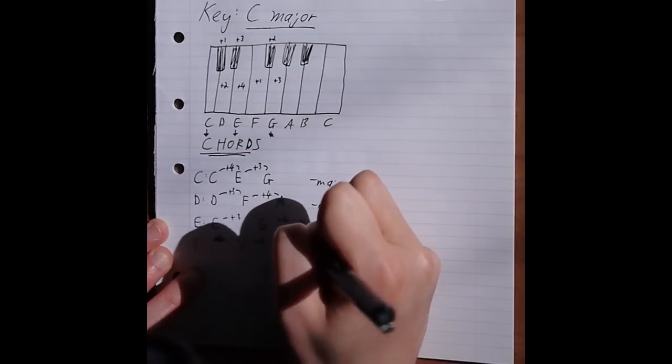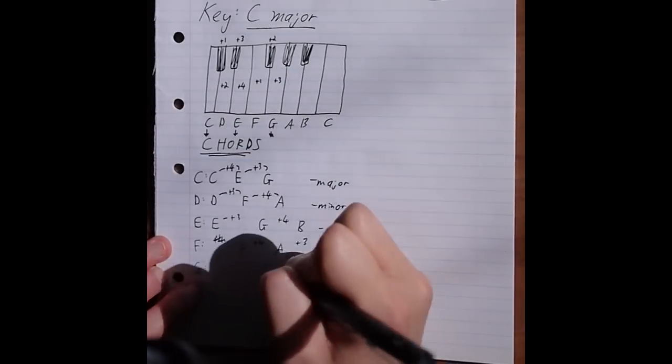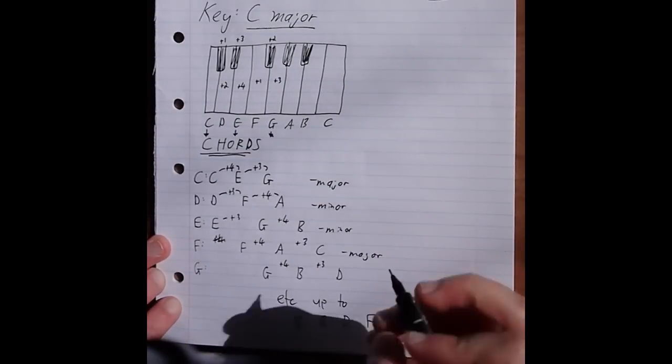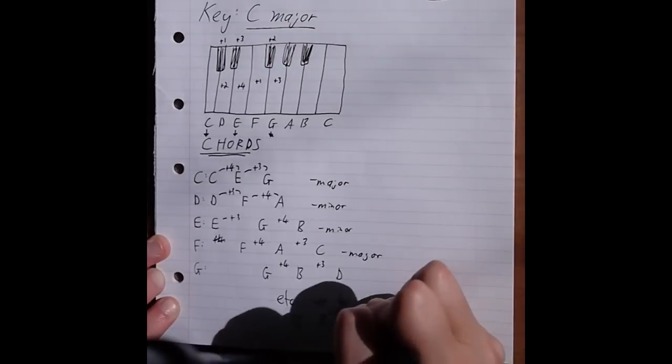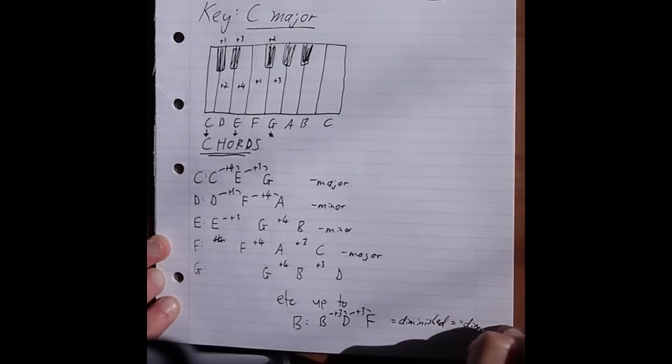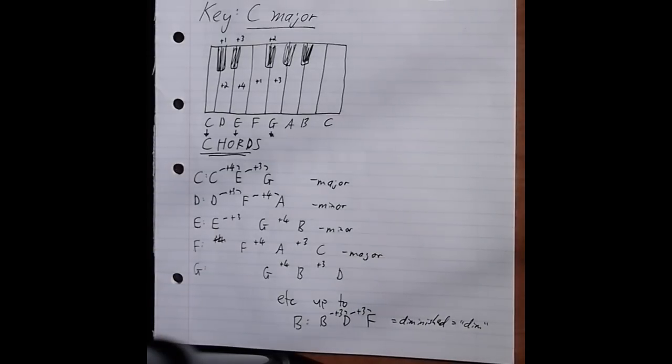E is minor, F major, G major, A minor, and then B is a bit different. It's plus 3 on both, which makes it a diminished. And of course you can translate all this into any key and get the same result. This is just based on C because C is simple, as there aren't any sharps and flats.